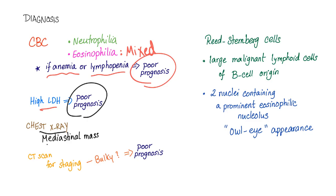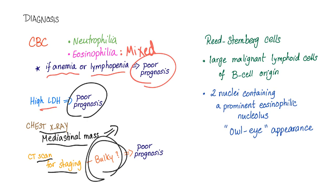On the chest X-ray, you can find a mediastinal mass, which is the lymphadenopathy. CT scan is used for staging — we do CT scan for the neck, chest, abdomen, and pelvis. Sometimes we see bulky collections of lymph nodes, and this carries a poor prognosis.